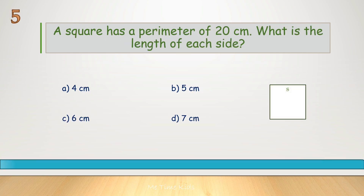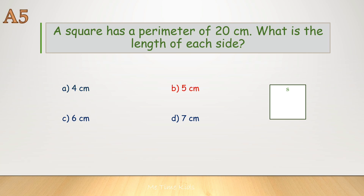A square has a perimeter of 20 centimeters. What is the length of each side? Correct answer is B, 5 centimeters.